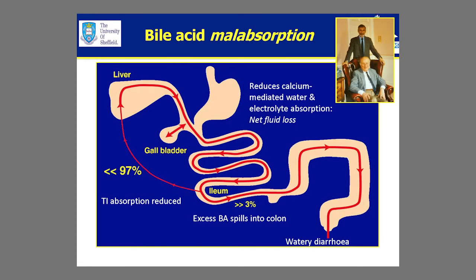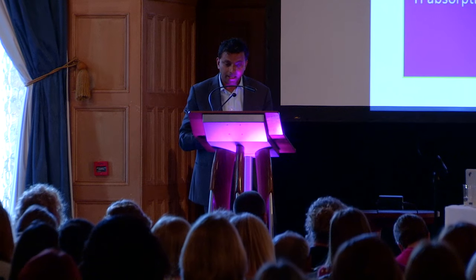I put him up there because he was one of the earliest researchers in bile acid malabsorption. This picture is a schematic diagram of how it works. Bile acids are made in the liver, stored in the gallbladder. You eat, out comes the bile acids to help the digestive process, and then they are reabsorbed in the terminal ileum — it's a circular motion.